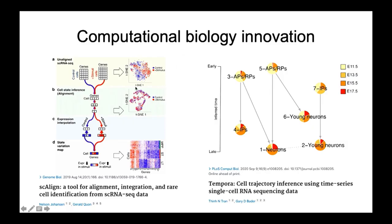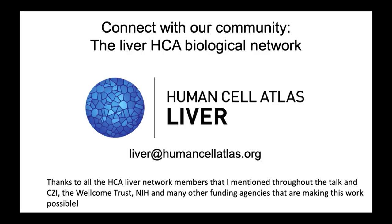My group is also thinking about how to develop methods to analyze and interpret single-cell maps that change over time, like the maps of the human lifespan being generated as part of the HCA Human Liver Project. Like other Human Cell Atlas projects, the Liver Project is open and shared. We hope the network of scientists will grow over time to speed progress toward completing the map, and we encourage anyone interested in human liver single-cell genomics to reach out and connect with the Liver Network.